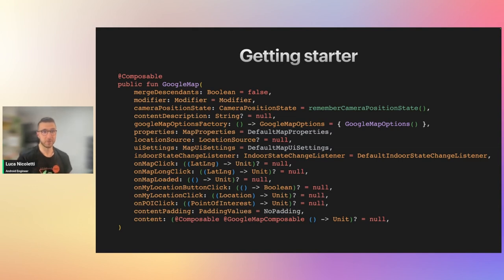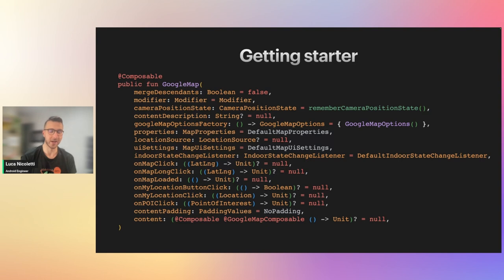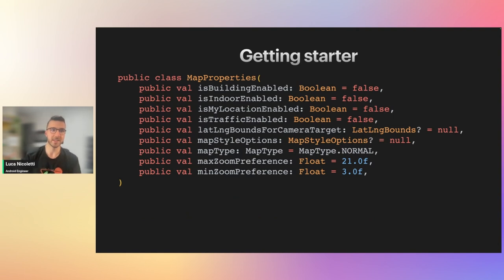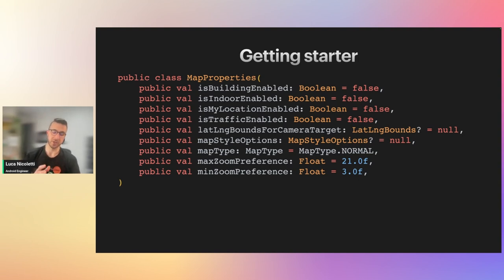This is the declaration of the Map composable function. Before this library was released, if you wanted to use a map instance in Jetpack Compose you had to wrap an existing Google Maps view using the old Android view system inside an AndroidView composable. The map allows you to customize it by providing MapProperties and MapUiSettings. The properties let you enable or disable indoor navigation, your location, traffic highlight, and specify latitude/longitude bounds for the camera target — preventing the user from moving outside your target.